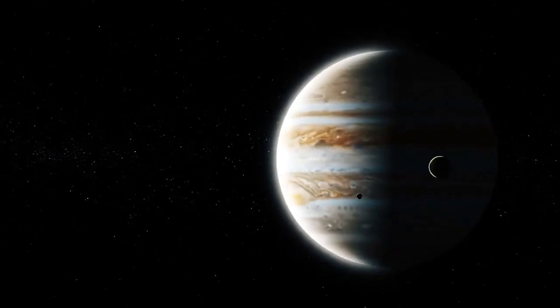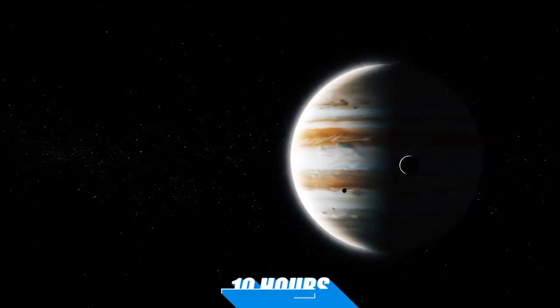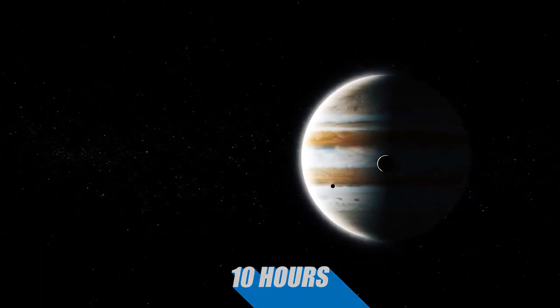The large gas giant, the fifth planet from the Sun, moves quickly for its size. It takes just 10 hours to complete an axis rotation, the fastest planet in our solar system.